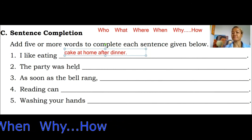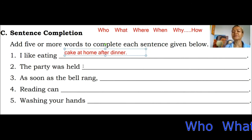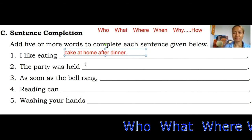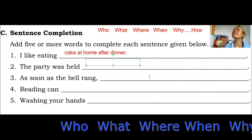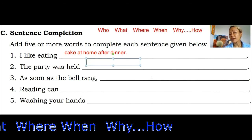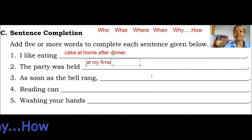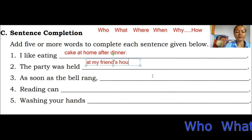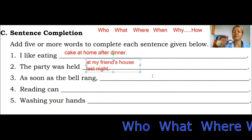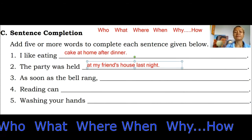Next one: 'The party was held.' Start again with what, where, and when. What is already there — it's the party. Where and when: at my friend's house, last night. So: 'The party was held at my friend's house last night.'